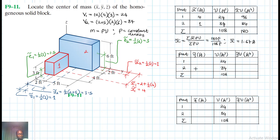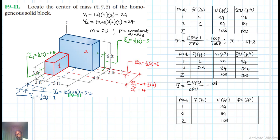For Y-bar: Y-tilde one is 1.5 and Y-tilde two is 3.5. So 1.5 times 24 equals 36, and 3.5 times 84 equals 294. The sum is 294 plus 24 equals 318. Therefore Y-bar equals 318 rho divided by 108 rho, which gives Y-bar equal to 2.94 feet.